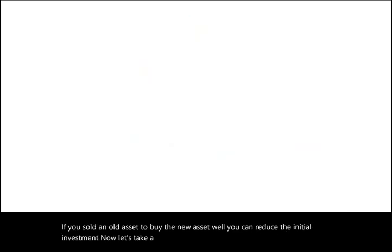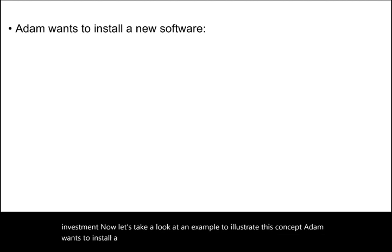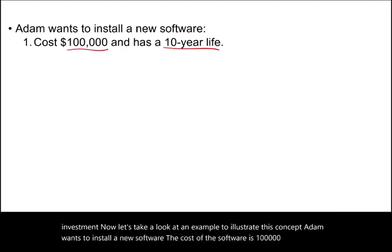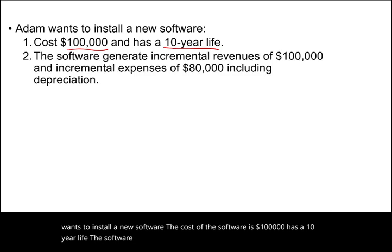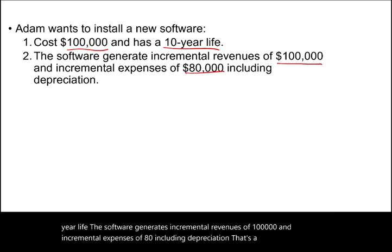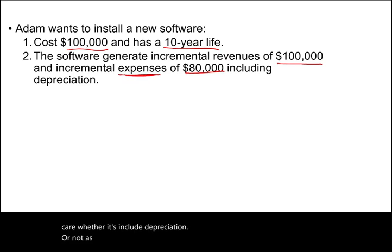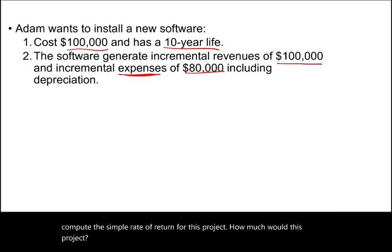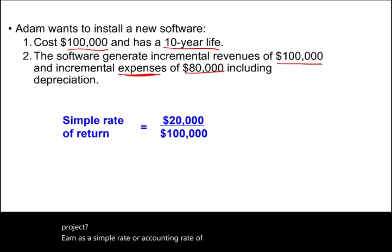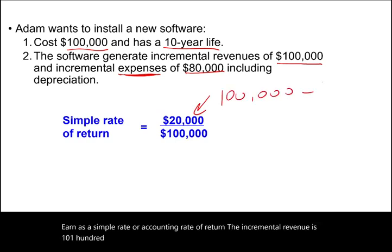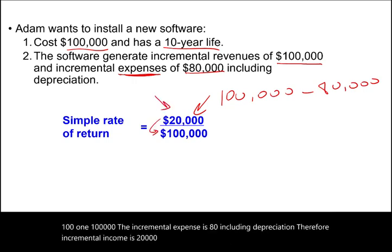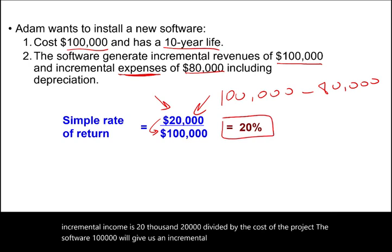Let's illustrate with an example. Adam wants to install new software costing $100,000 with a 10-year life. The software generates incremental revenues of $100,000 and incremental expenses of $80,000, including depreciation. Incremental revenue of $100,000 minus incremental expenses of $80,000 gives incremental income of $20,000. Dividing $20,000 by the initial investment of $100,000 gives an accounting rate of return of 20%.